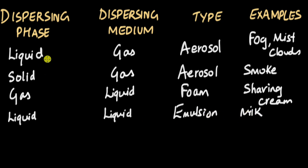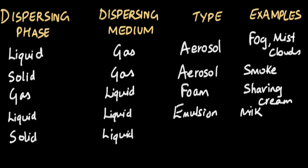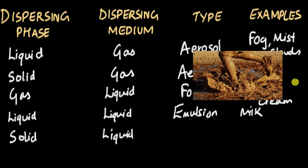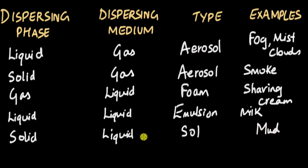Now let's take the dispersing phase as solid and the dispersing medium as liquid. An example of this can be mud. This type of colloid is called a sol. Example is mud.